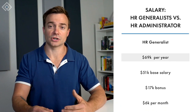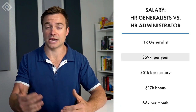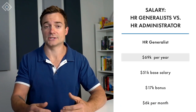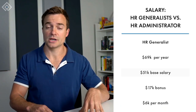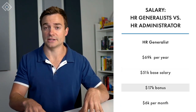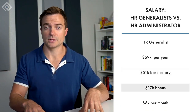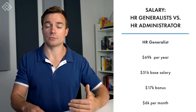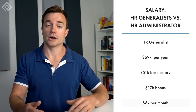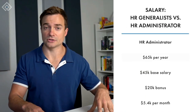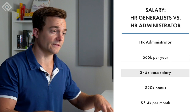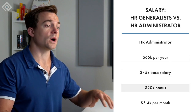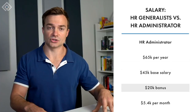Now let's take a look at salaries. According to Glassdoor, HR generalists earn an average of $69,000 annually in the U.S. This salary includes a base pay of $51,000 per year and bonuses of upwards of $17,000 per year, meaning an HR generalist earns almost $6,000 per month. HR administrators earn $65,000 per year in the U.S., with a base salary of $45,000 per year and $20,000 in additional bonuses.